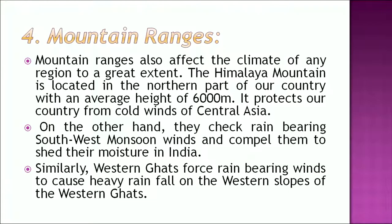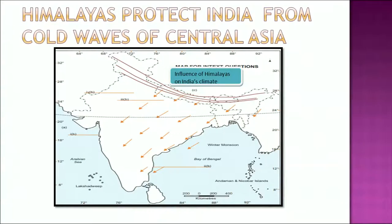Another factor which influences climate is mountain ranges. The Himalaya mountain is located in the northern part of our country with an average height of 6,000 meters. It protects our country from cold winds of central Asia. On the other hand, it checks rain-bearing southwest monsoon winds, compelling them to shed their moisture in India. Similarly, the Western Ghats force rain-bearing winds to cause heavy rainfall on their western slopes. Himalayas protect India from cold waves of central Asia — look at this map that also shows the same.